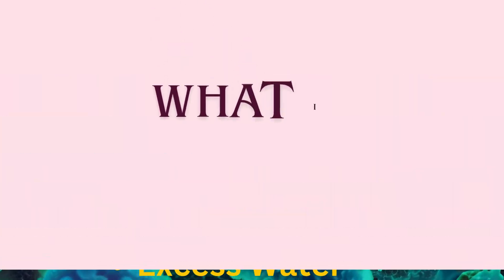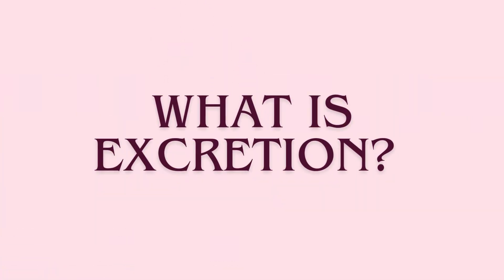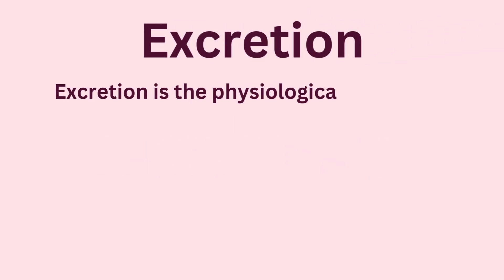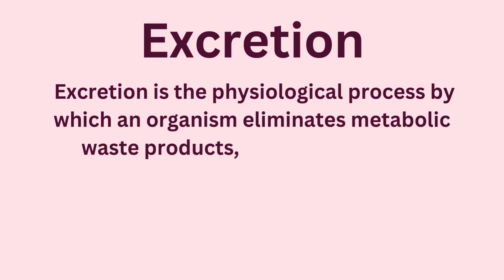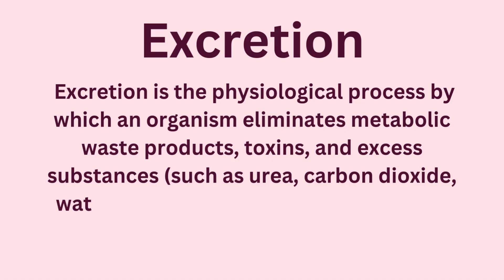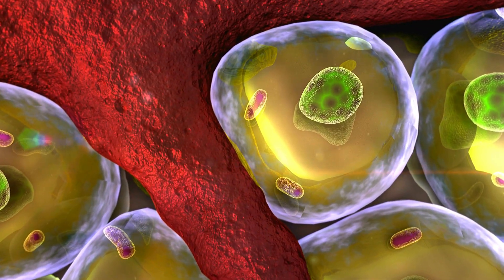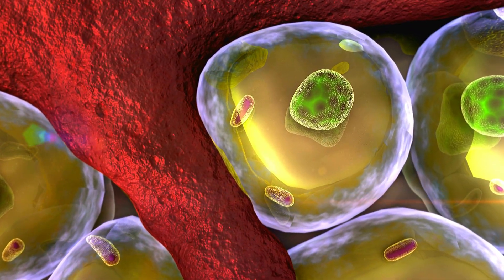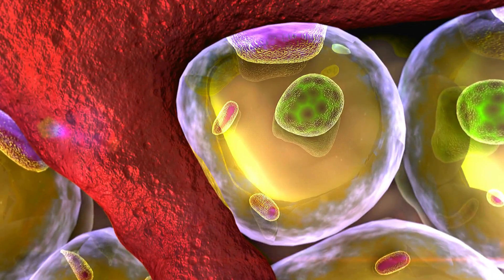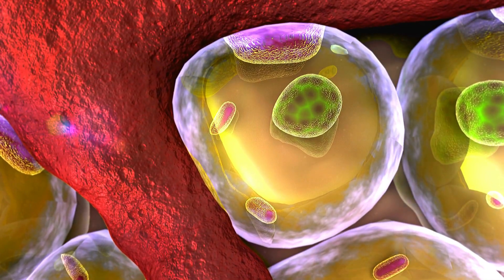Let's define excretion first. Excretion is the physiological process by which an organism eliminates metabolic waste products, toxins, and excess substances such as urea, carbon dioxide, water, and salts from its cells and body fluids to maintain internal homeostasis, prevent toxicity, and regulate osmotic balance.